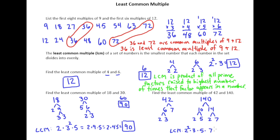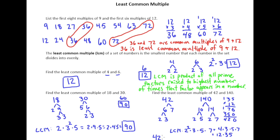Then we multiply it all out: 2² × 3 × 5 × 7 = 4 × 3 × 5 × 7 = 12 × 35. And what we end up with is 420. So our LCM of 42 and 140 is 420.